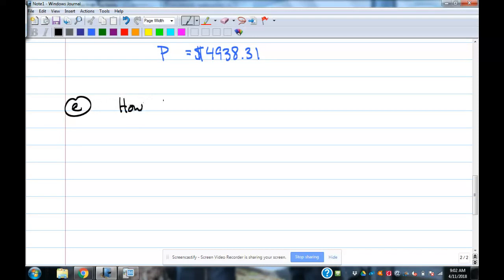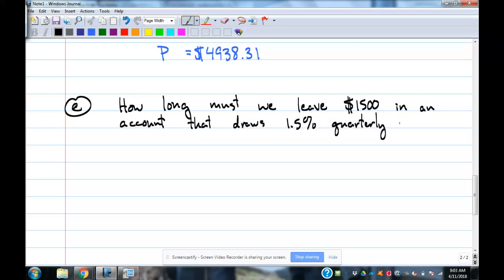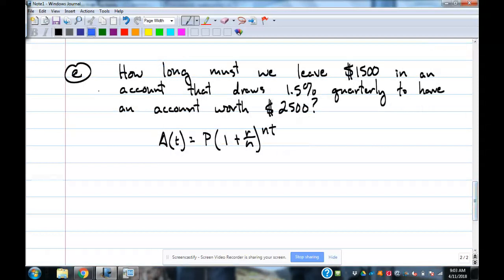How long must we leave $1,500 in an account that draws 1.5% quarterly to have an account worth $2,500? Basically, how long is it going to take us to earn $1,000 out of our account? We start with $1,500. So, our formula, A of t, P times 1 plus r over n to the nt. What are the things we know? Account worth is how much? $2,500. What else do we know?